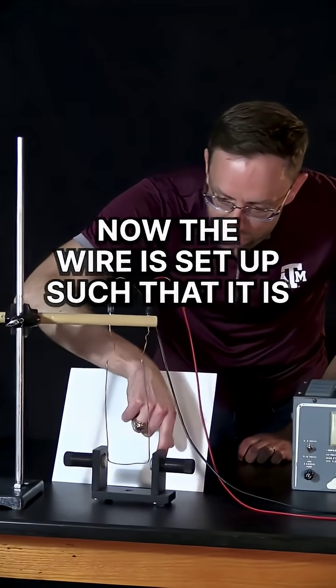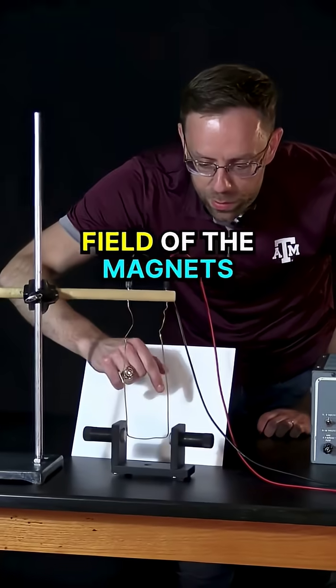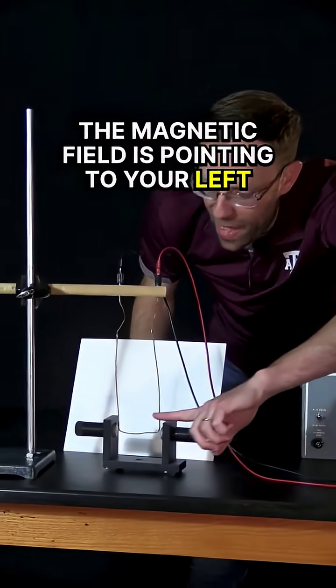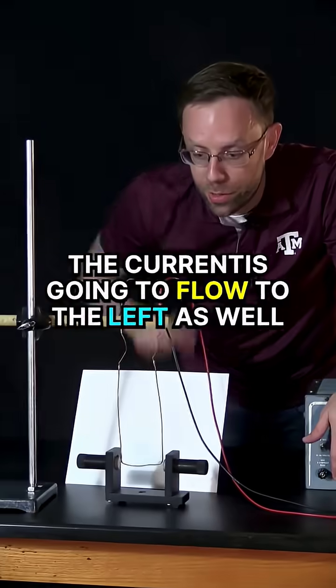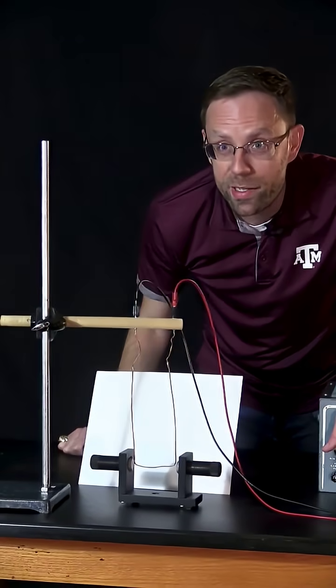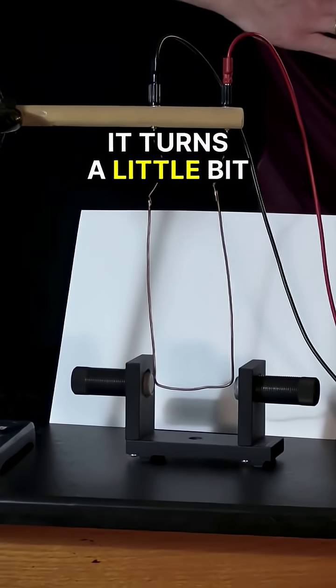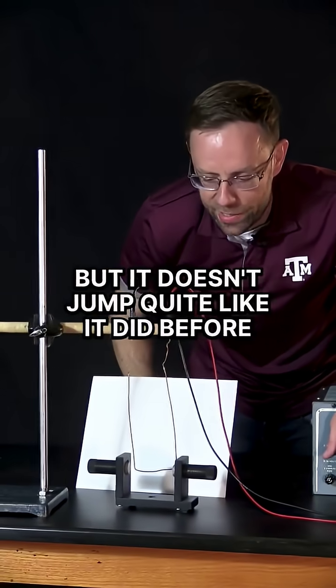Now, the wire is set up such that it is parallel to the magnetic field of the magnets. In this orientation, the magnetic field is pointing to your left. The current is going to flow to the left as well. Ready? You notice that almost nothing happens.